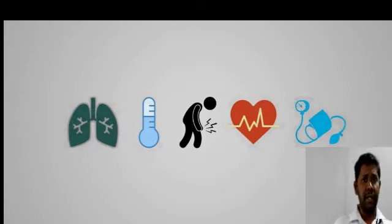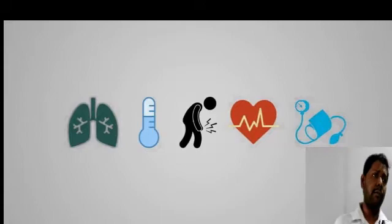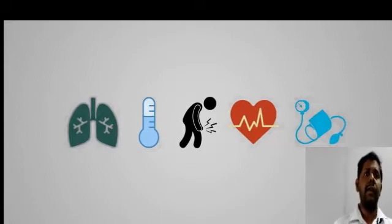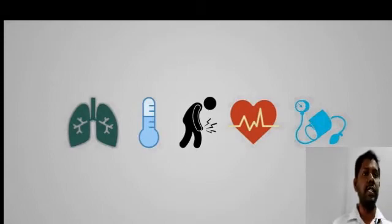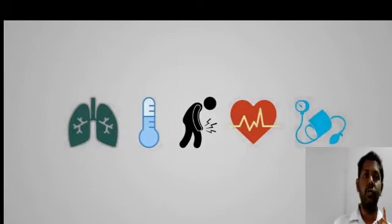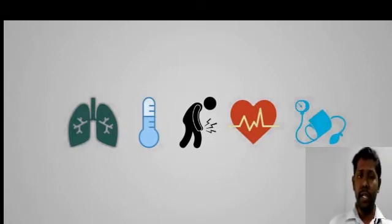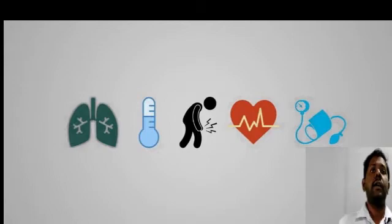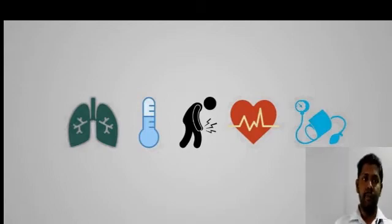Coming to respiratory rate — the normal respiratory rate is 14 to 18 respirations per minute. One inspiration and expiration as observed in the abdomen of the patient counts as one respiratory cycle.